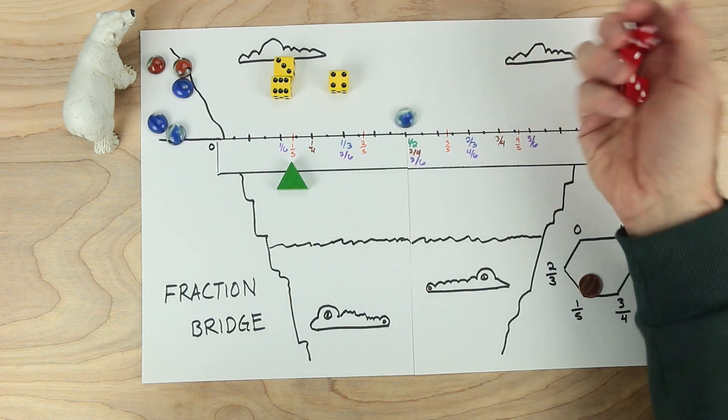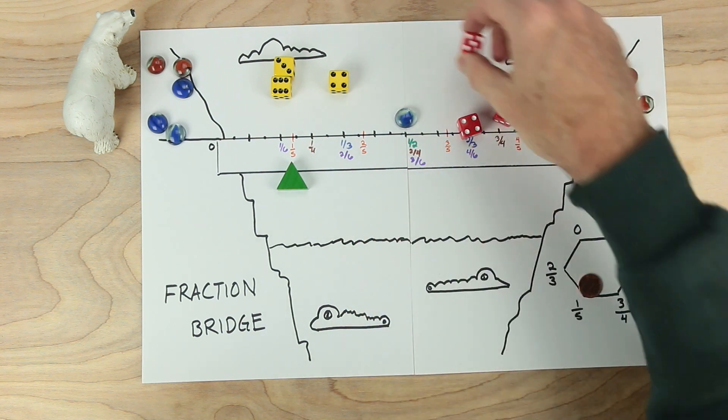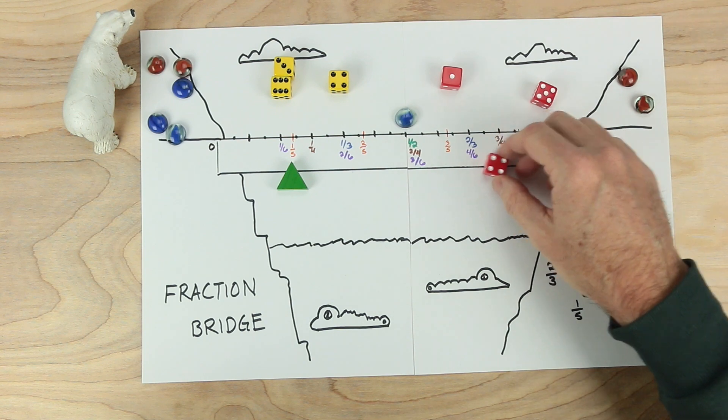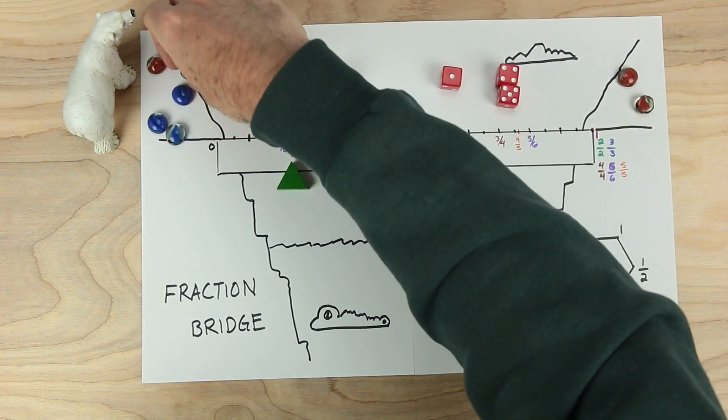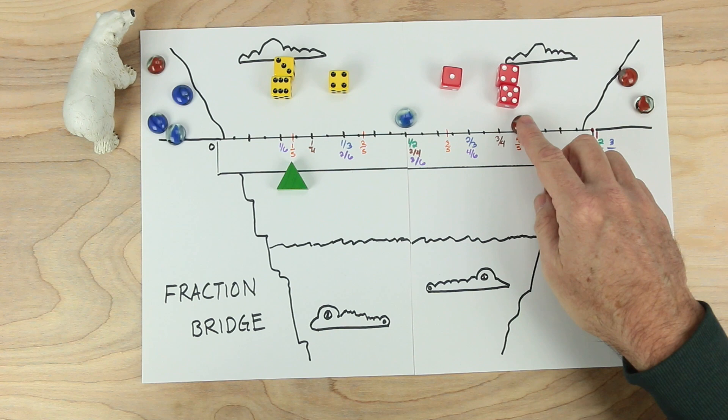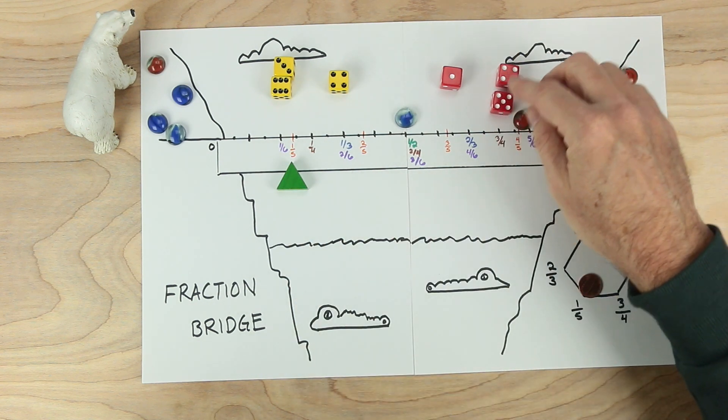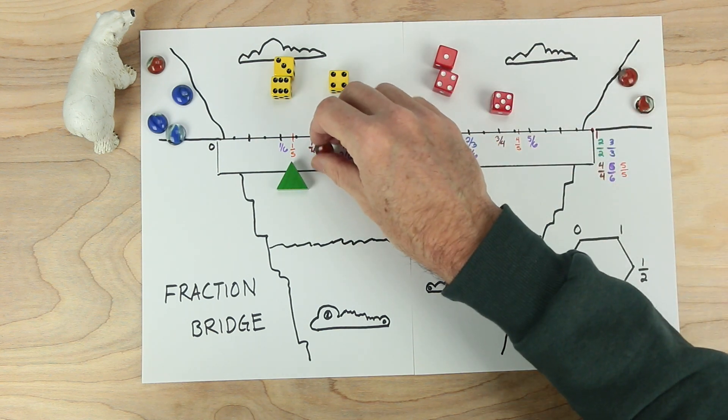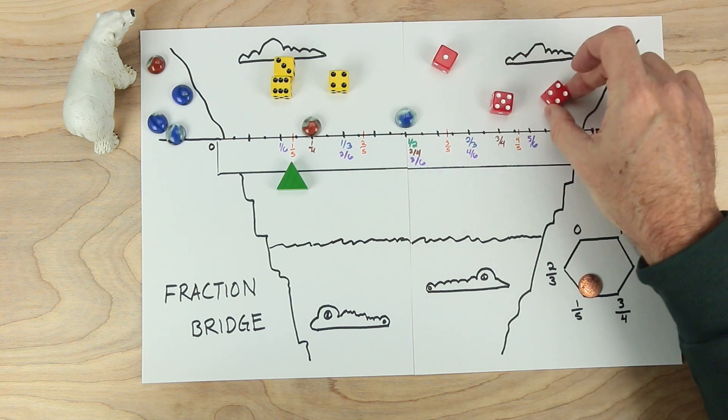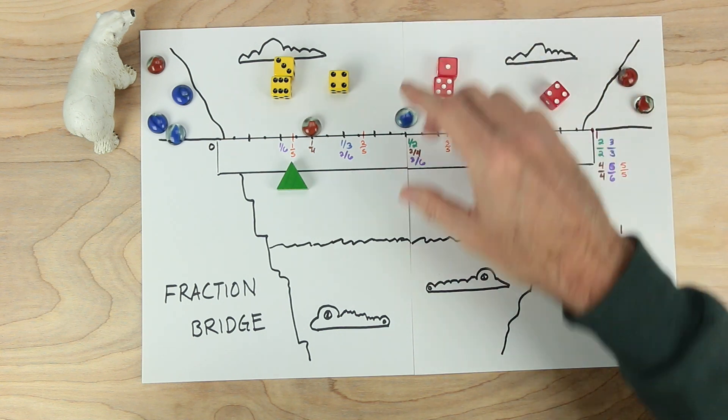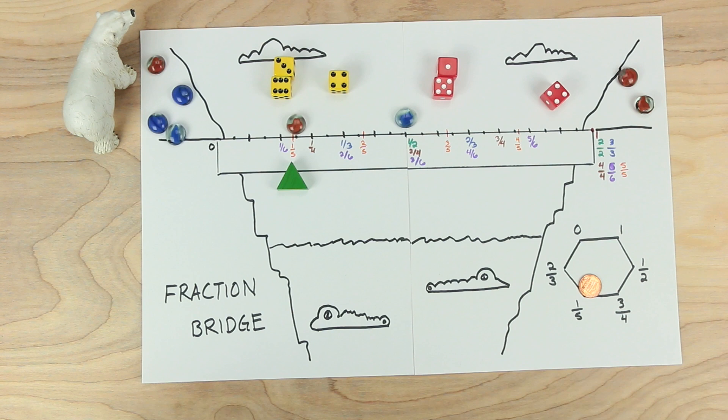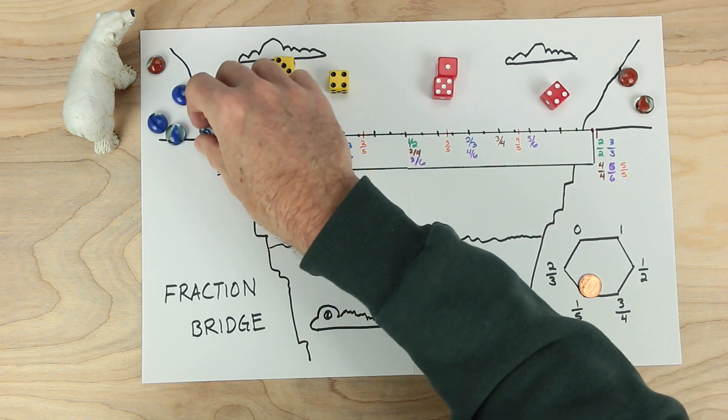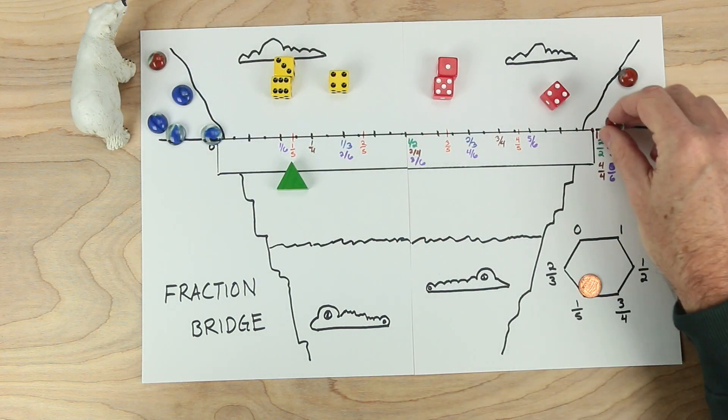Red's going to take a turn. And red rolls a one, a four, and a five. Red could choose four fifths and put a piece over here. Four fifths is way over here. That's pretty far from one fifth. Red could also choose to do one fourth. One fourth is pretty close. But of course, as you see it already, red also could choose one fifth and just move right here and be the winner. You know what that means for blue? Blue has to go back home, and red takes another piece to the other end of the bridge.